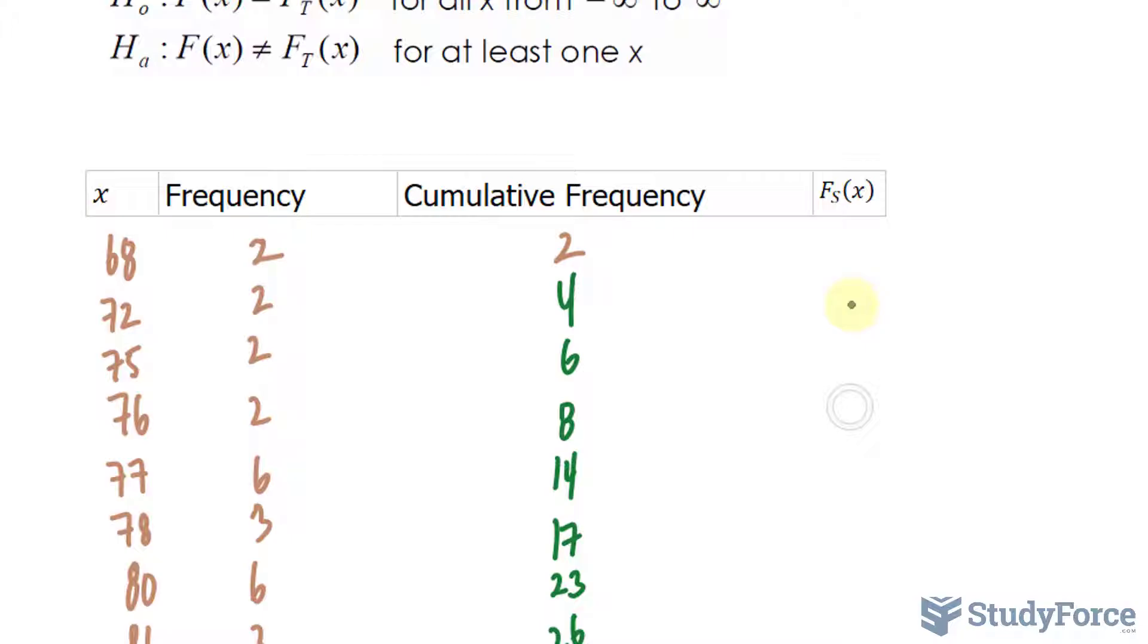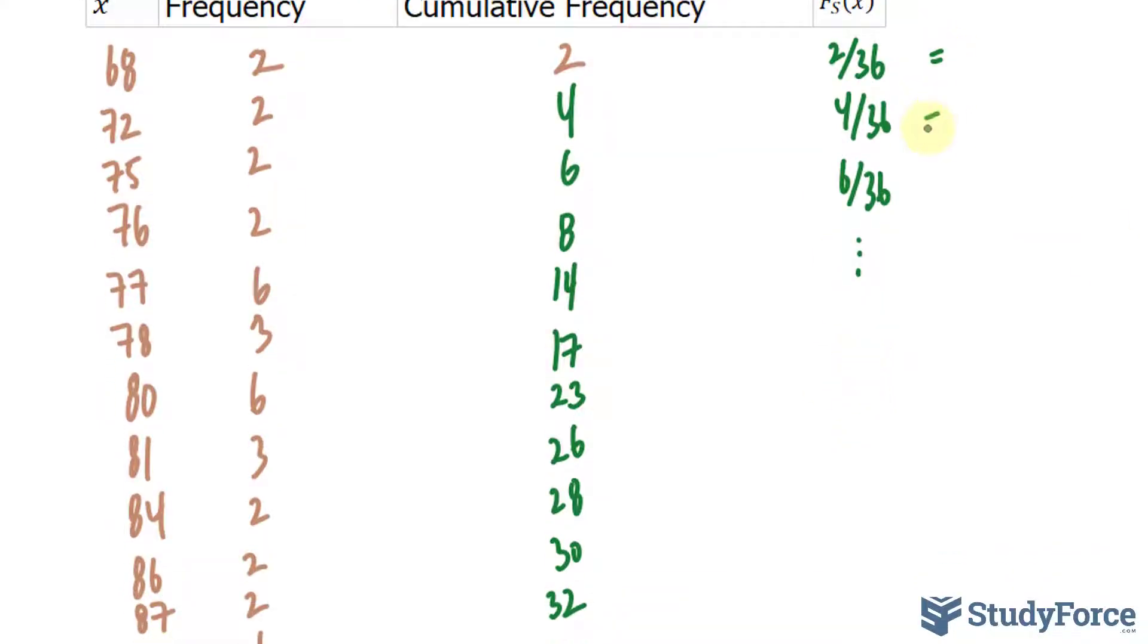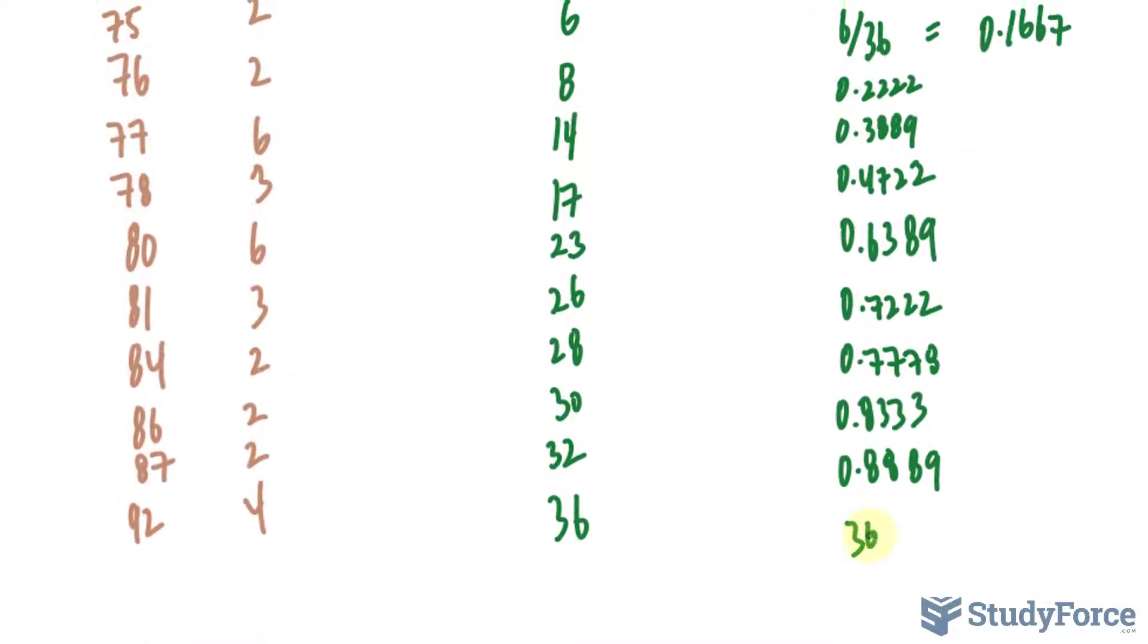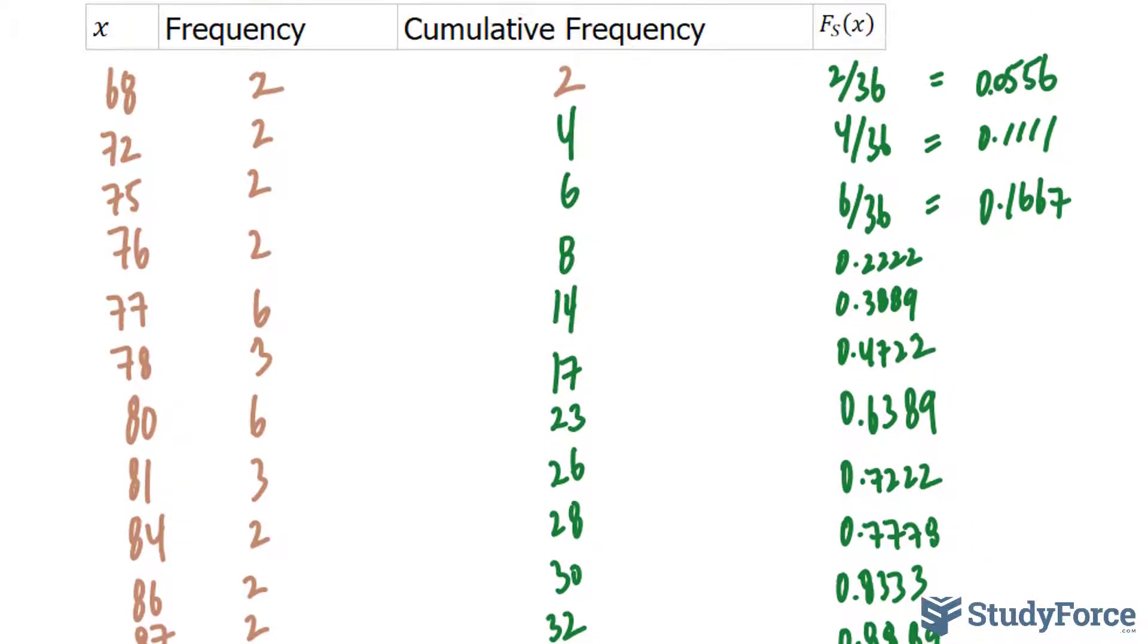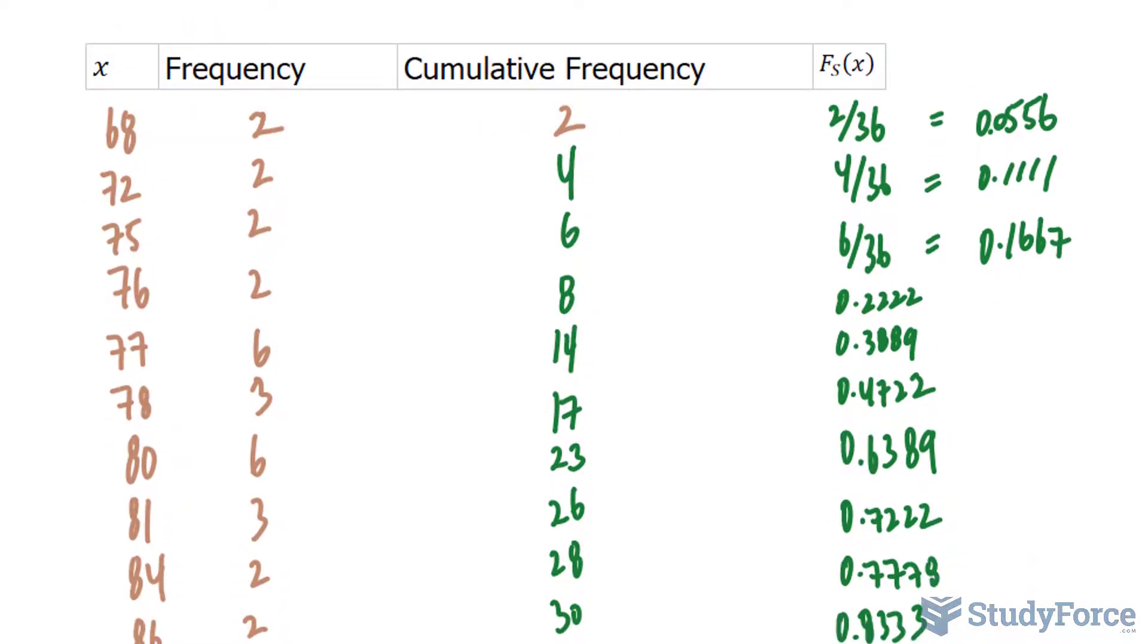Now, to find out, this column will take the cumulative frequency and divide it by 36. 4 divided by 36, 6 divided by 36, and you get the idea. You should end up with the following outputs. So we have 36 over 36 equals 1, and the rest of the values for this column are written on the screen.